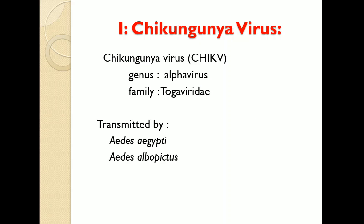The virus is spread to people by two types of mosquito: Aedes albopictus and Aedes aegypti, which mainly bite during the day. The virus may circulate within a number of animals including birds and rodents. Symptoms include fever and joint pain, which typically occur 2 to 12 days after exposure.